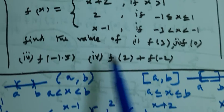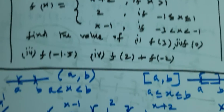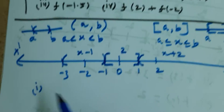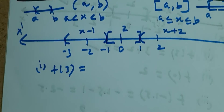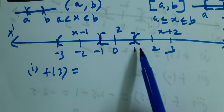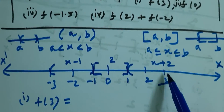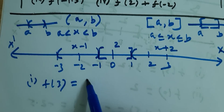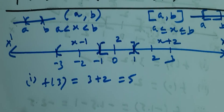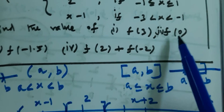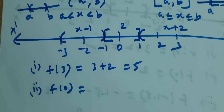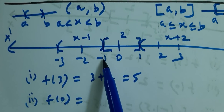On the number line, the function has three parts. For number line value 3, x plus 2 applies — x plus 2 is the formula. For f of 0: 0 lies in the interval minus 1 to plus 1, so f of 0 equals 2.